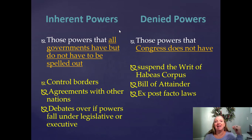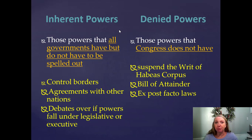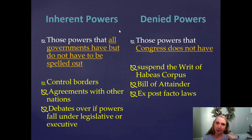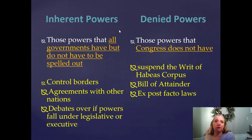Congress cannot issue a bill of attainder — meaning Congress cannot name a group of people and establish their punishment, because that is a judicial power. Congress can establish that if someone is convicted of a crime, here is their punishment, but applying it to a specific person or group must be done by the judicial branch. Congress also cannot pass ex post facto laws. For example, females could drink at age 18 in Oklahoma until the late 1970s when it was changed to 21. Women who drank at 19 in 1971 cannot be charged with a crime because of a law passed in 1977. Ex post facto means you cannot punish someone for doing something that was not a crime at the time.